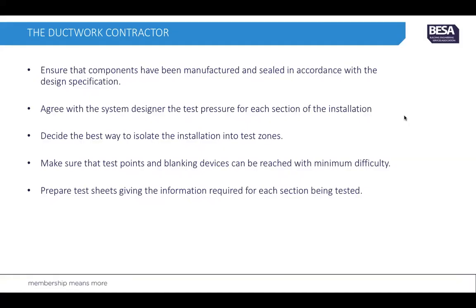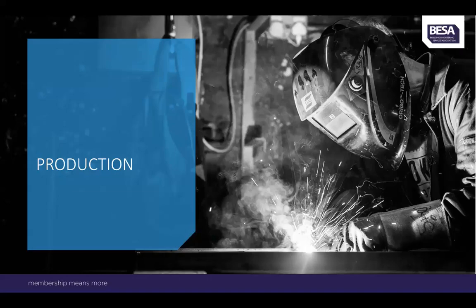The ductwork contractor must ensure that all components have been manufactured and sealed in accordance with the design specification. You must agree with the system designer on the test pressure for each section of the installation and decide the best way to isolate the installation into test zones. Make sure that test points and blanking devices can be reached with minimum difficulty, and prepare test sheets giving the information required for each test.